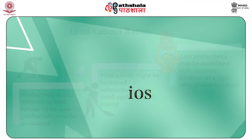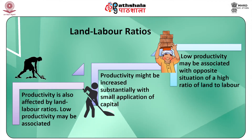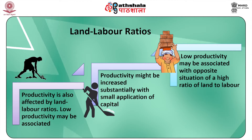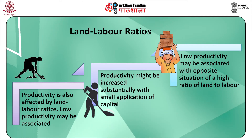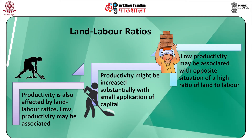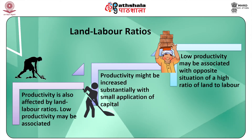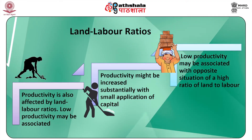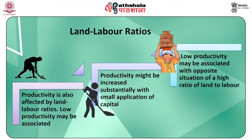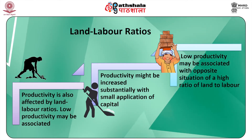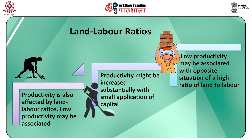Number four: land-labor ratios. Productivity is also affected by land-labor ratios. Low productivity may be associated with high population density and a high ratio of labor to land, in which case productivity might be increased substantially with small applications of land improvement such as drainage schemes and fertilizers. On the other hand, low productivity may be associated with a high ratio of land to labor, in which case the solution likely involves much larger doses of capital for labor to work with. Most countries in Asia have a high ratio of labor to land, while in Africa the reverse is true.